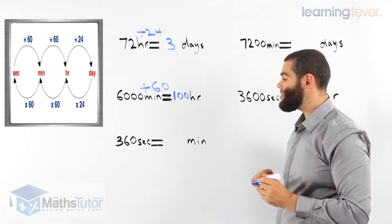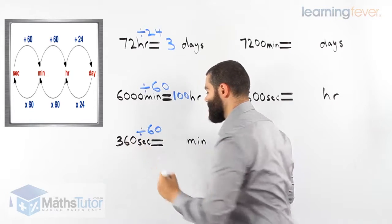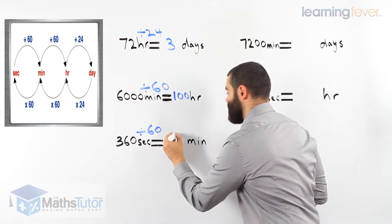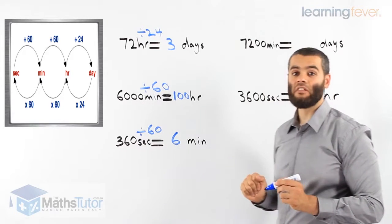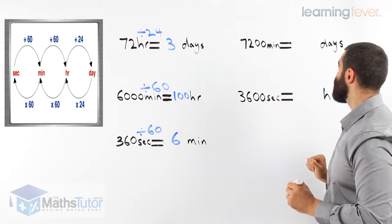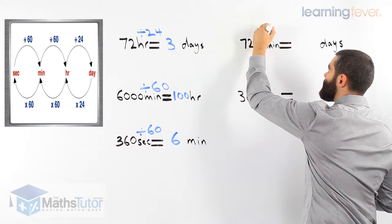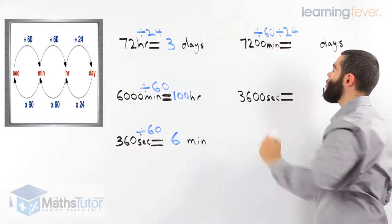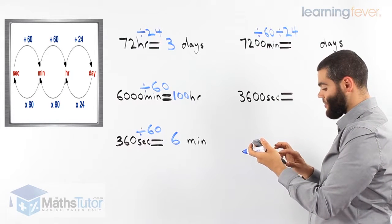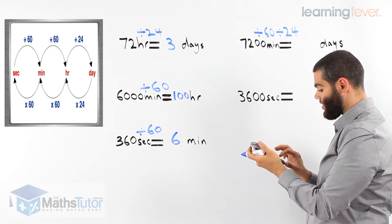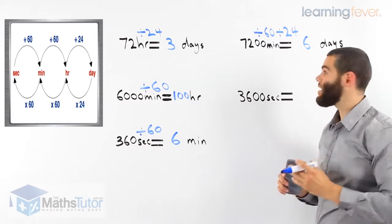This example: 360 seconds, converting to minutes. We know from seconds to minutes we divide by 60. 360 divided by 60 gives 6 minutes — 6 minutes has 360 seconds in it. Next, we're going from minutes to days: 7,200 minutes to days. We look and notice we have to divide by 60, and then divide by 24. 7,200 divided by 60 divided by 24 gives 5 days — in 5 days there are 7,200 minutes.